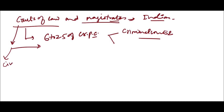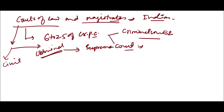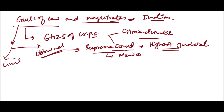There are two types of courts: civil and criminal. Criminal courts are further divided into several types. First is the Supreme Court, which is the highest judicial tribunal. It is located in New Delhi and has power of supervision over all courts in India.